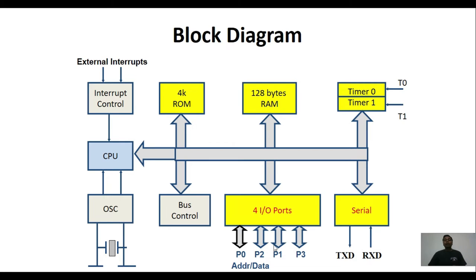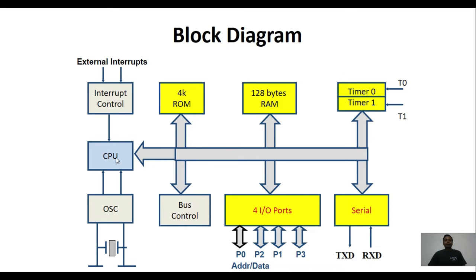Out of the four I/O ports, Port 0 and Port 2 are multiplexed with the address and data bus of 8051, and Port 3 has some alternate functions. Whenever we are using any of these ports, we have to make sure we are using that port for a particular purpose, as only one function can be assigned to a pin at a time.